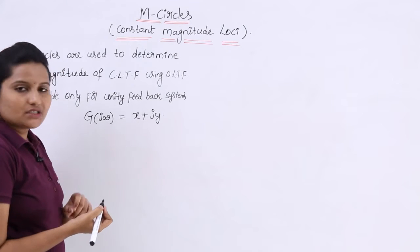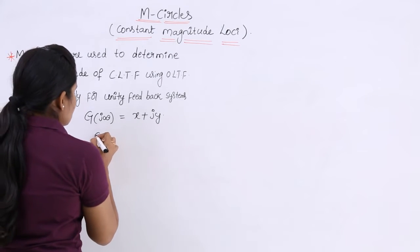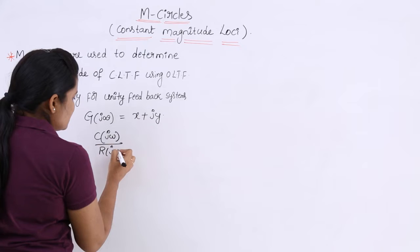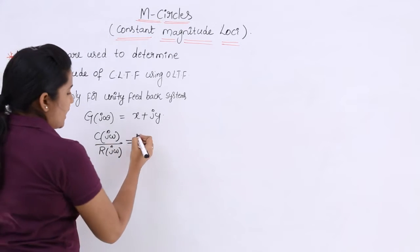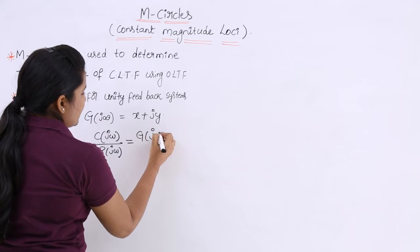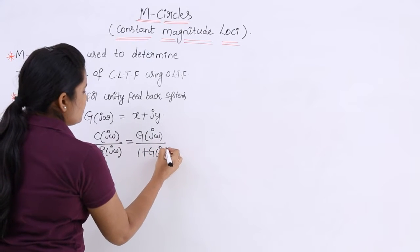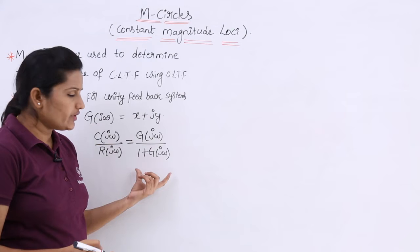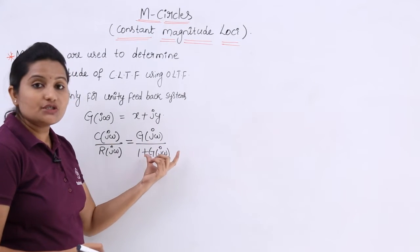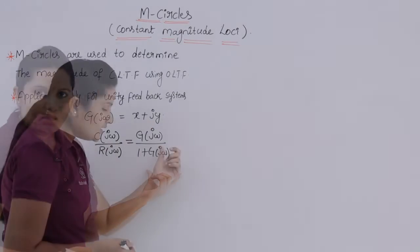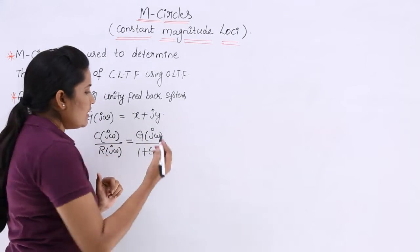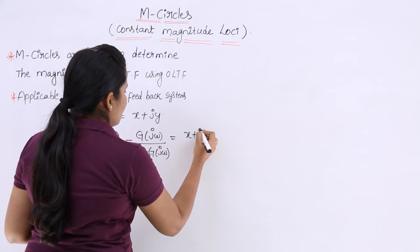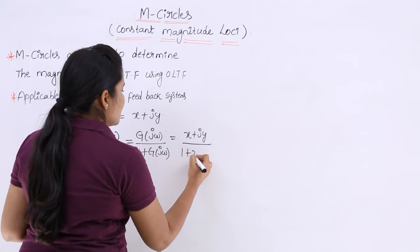If we want the closed-loop transfer function — that means C(s)/R(s) or C(jω)/R(jω) — this is equivalent to G(jω) divided by 1 plus G(jω). In place of G(jω), I substitute x plus jy, giving us (x + jy) divided by (1 + x + jy).